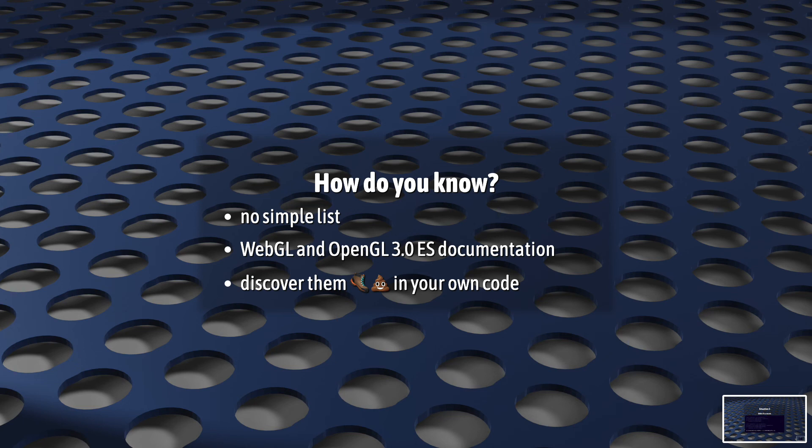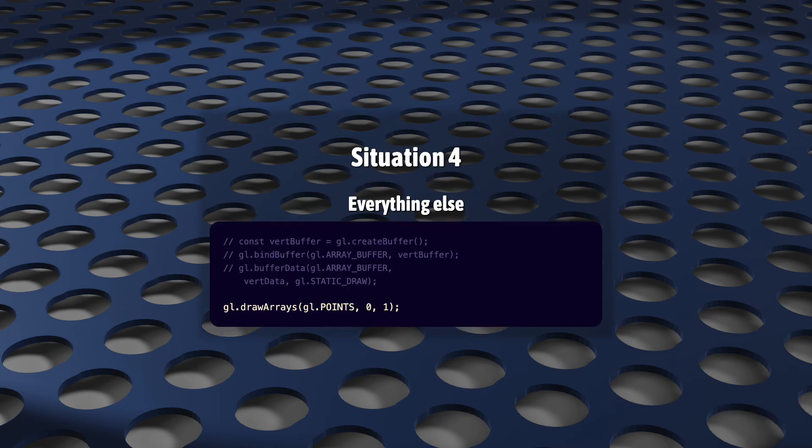Now, I said that there were three situations, but there's a fourth. Consider drawArrays. We started this series with a Hello World example that used drawArrays without any vertex data, no attributes, no uniforms, no buffers, no bindings, nothing, and it worked just fine. It even painted a primitive to the screen. DrawArrays, like most WebGL functions, is target-free.